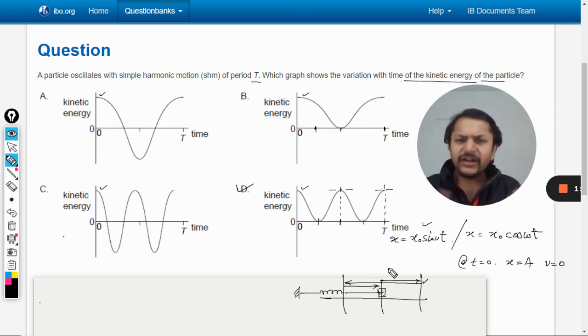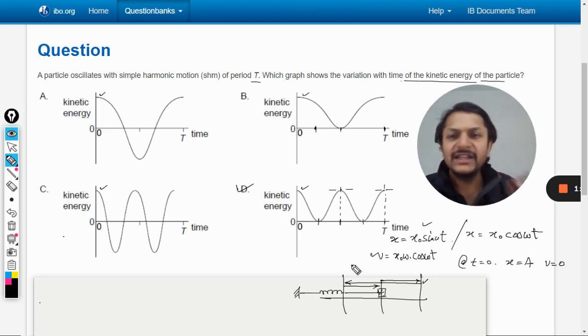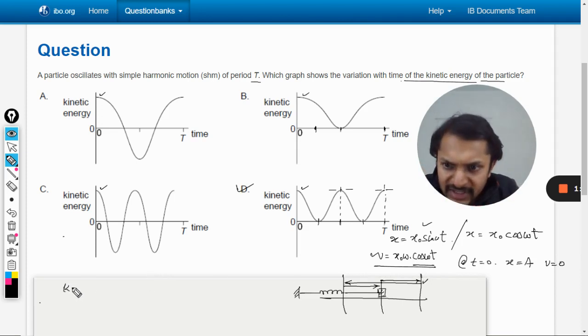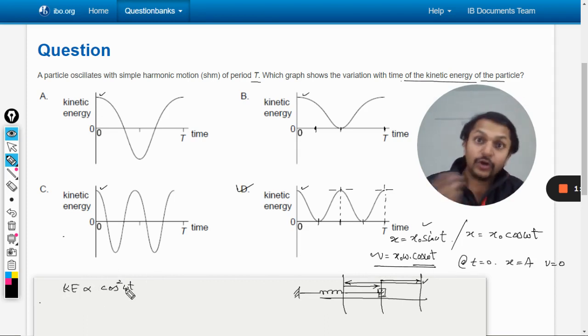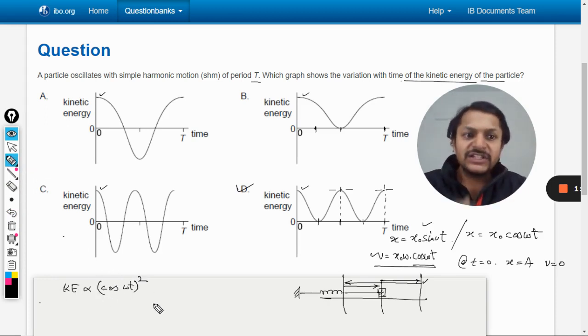There are many other methods also to do this. For example, if this is the displacement, the velocity will be given by v equals x₀ omega cos omega t. This formula is given in the data booklet in topic 9.1. You can see that the velocity is a variable of cos, so the kinetic energy will be directly proportional to cos squared omega t.